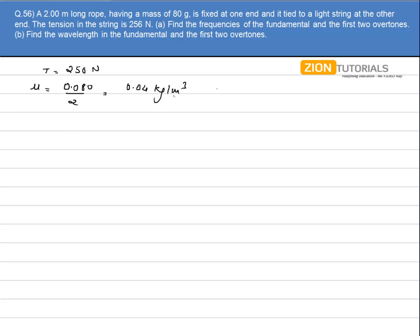Now I have to calculate the fundamental frequency. Now it is given that the other end is tied to a light spring. So that junction will be an antinode because it is a light spring.